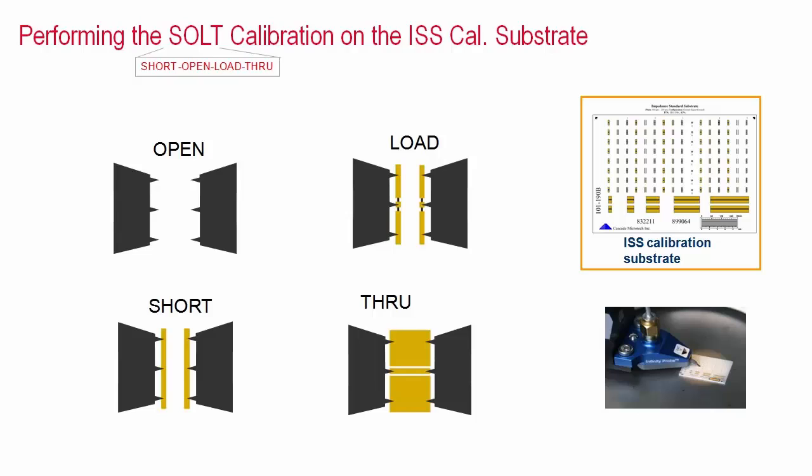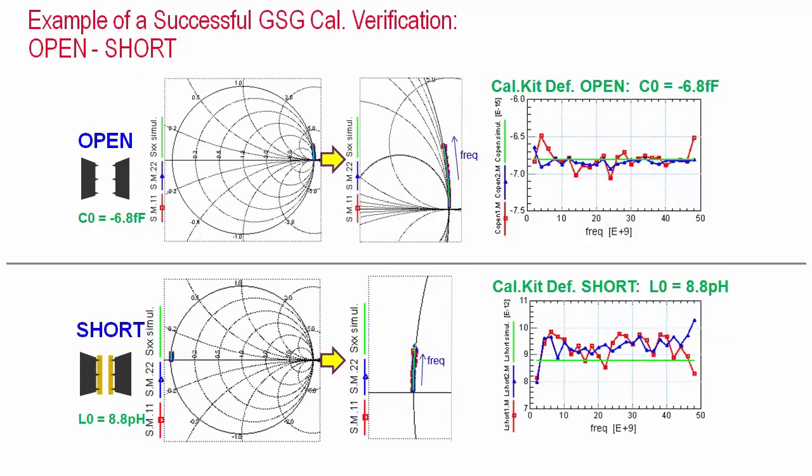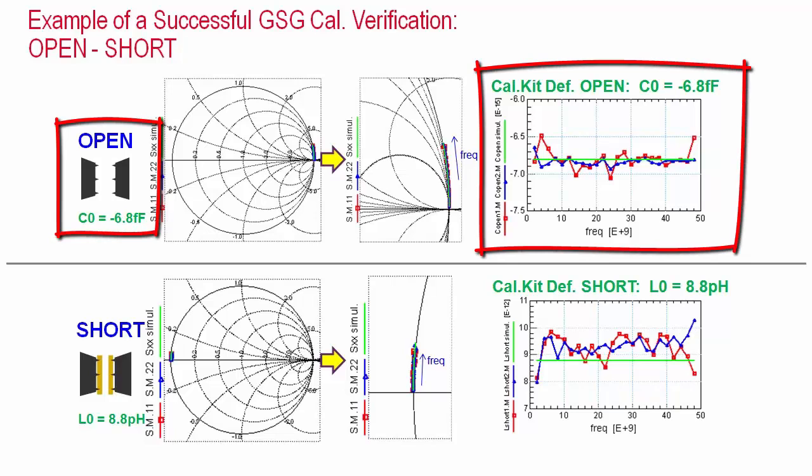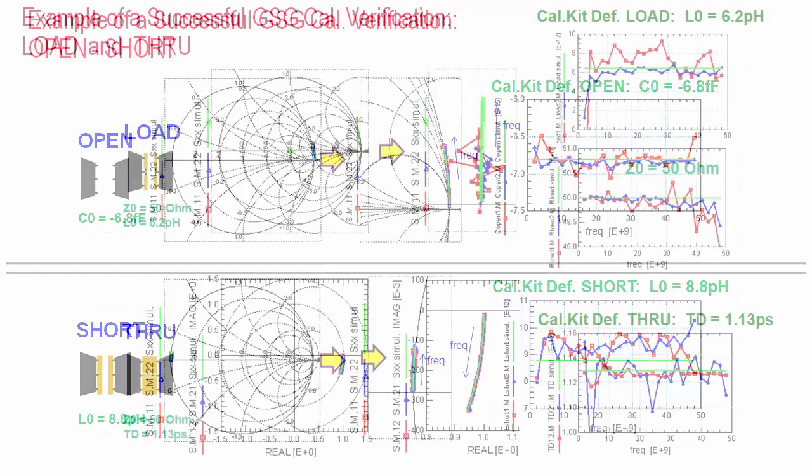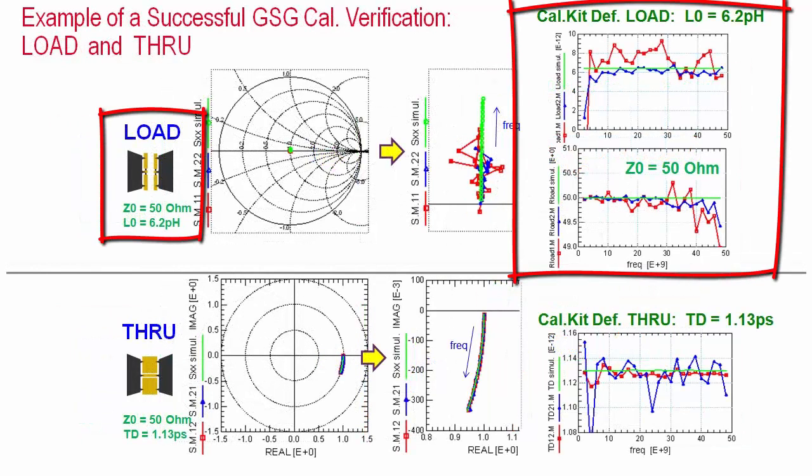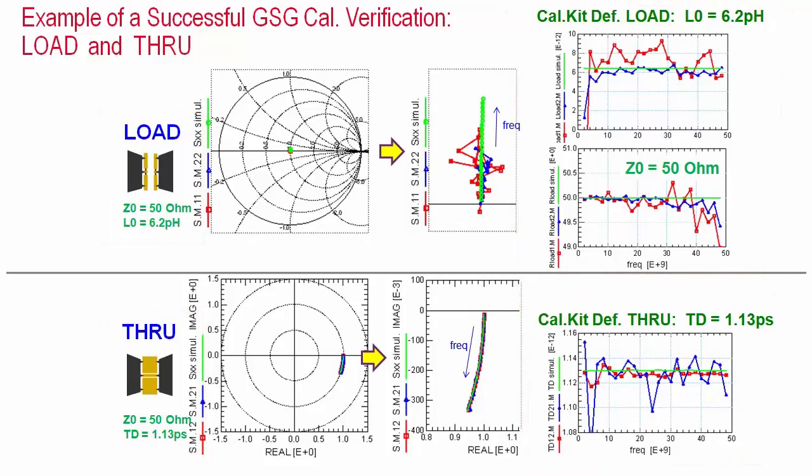But it is very important to verify the calibration. I therefore re-measure the open and short cal standards and compare them to their SPICE models, applying Keysight's IC-CAP device modeling software and the download files of this video. The values, displayed as a function of frequency, represent a very good match between re-measurement and the SPICE models. The same verification is also applied to the load and the through. Only when all four re-measurements exhibit an excellent fit to the simulations, we have performed a correct and reliable network analyzer calibration.